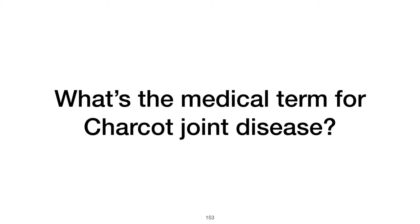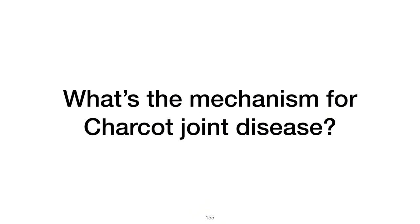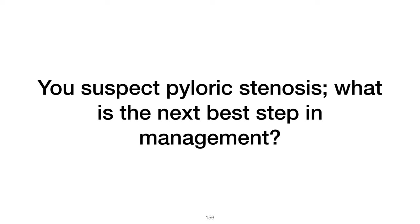What is the medical term for Charcot joint disease? The medical term is neuropathic arthropathy, commonly seen in patients with diabetes mellitus. The mechanism involves impaired sensation and joint proprioception leading to the disease.